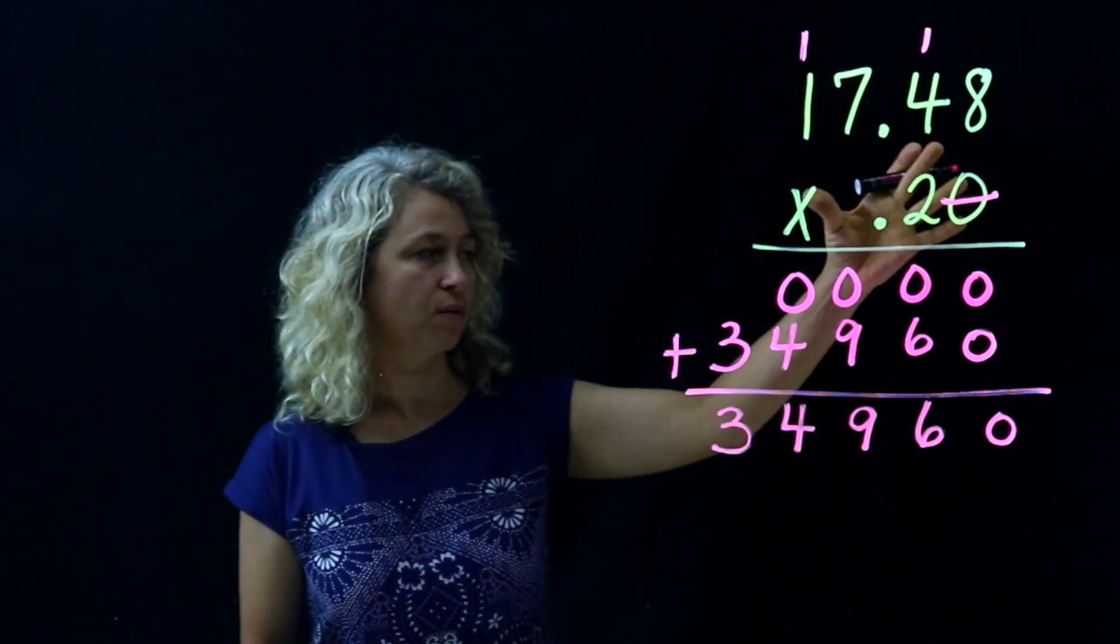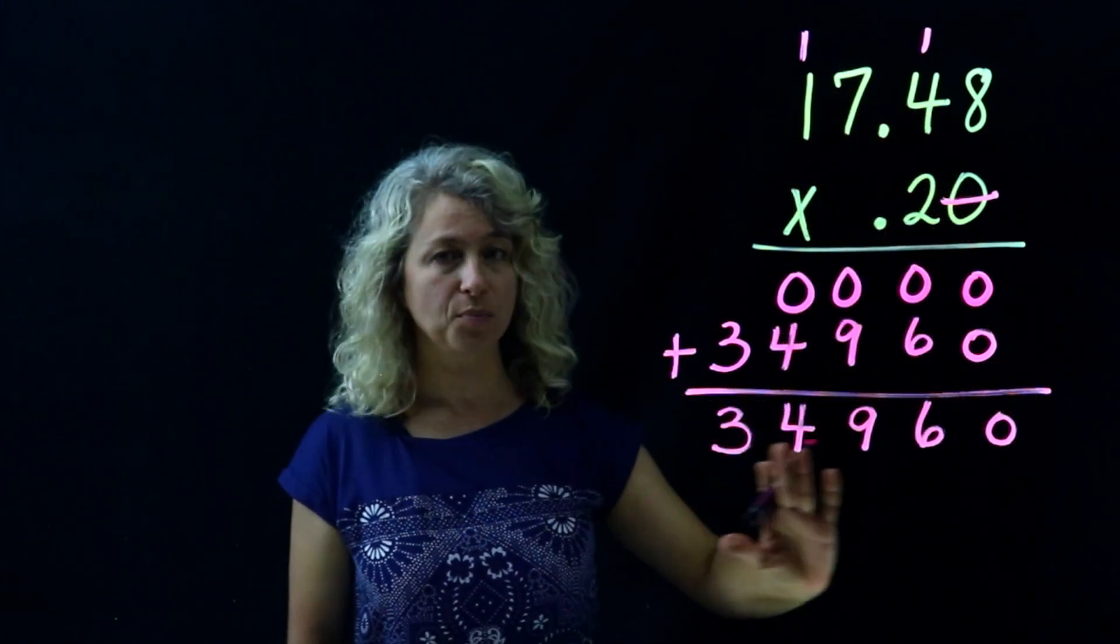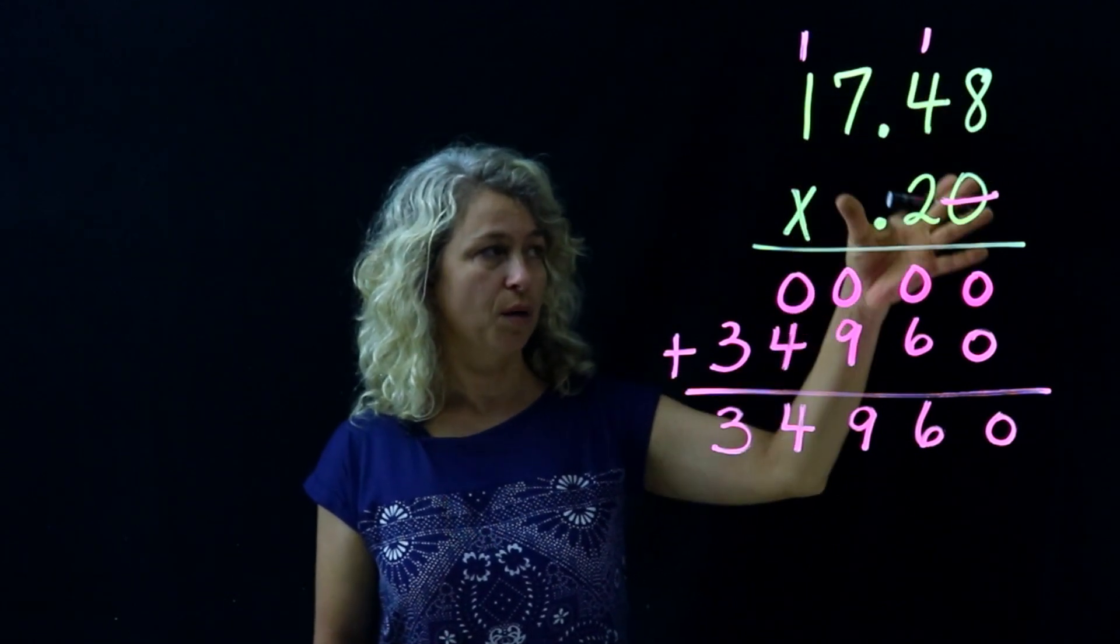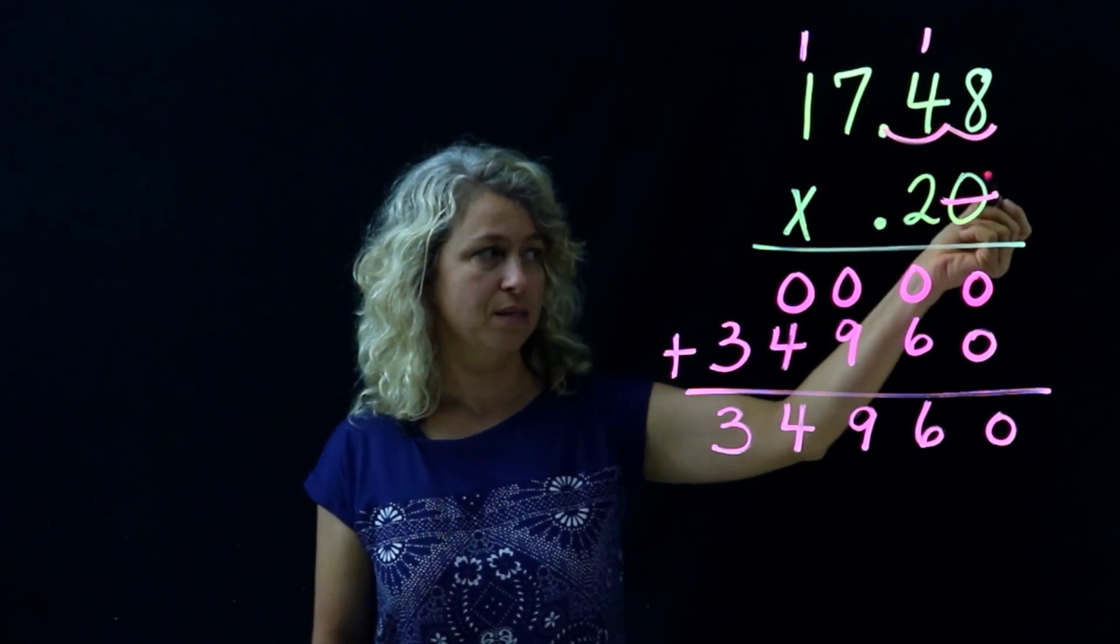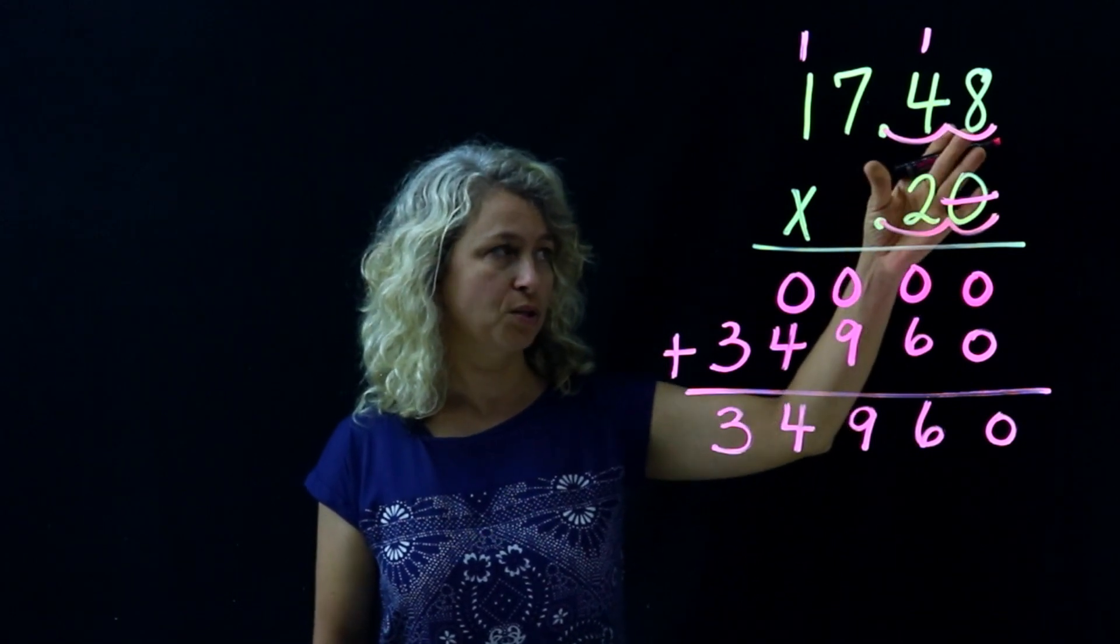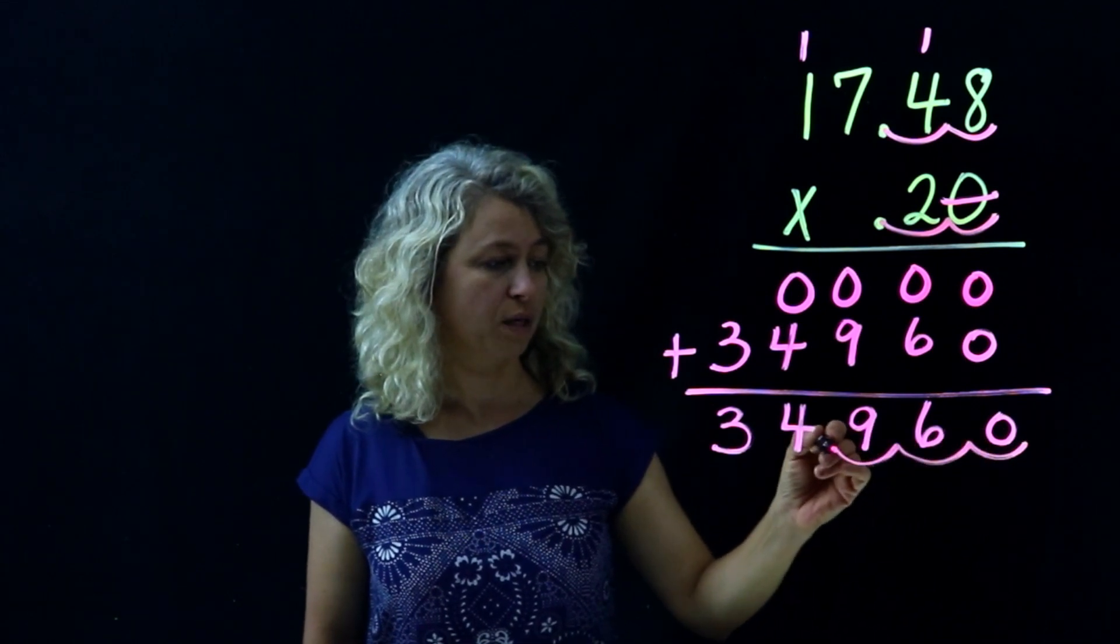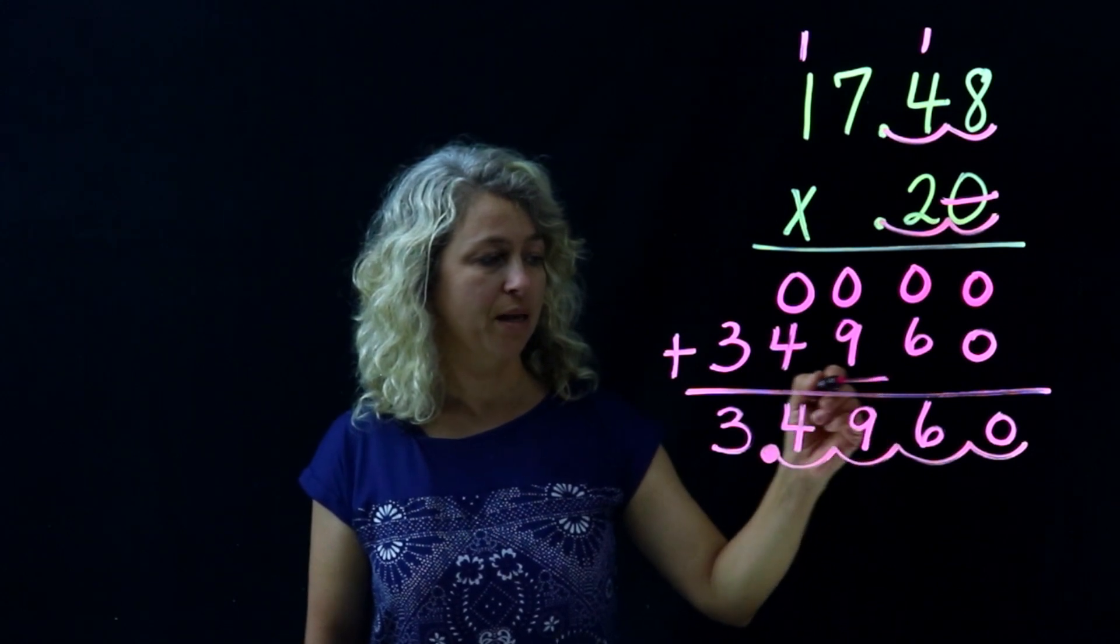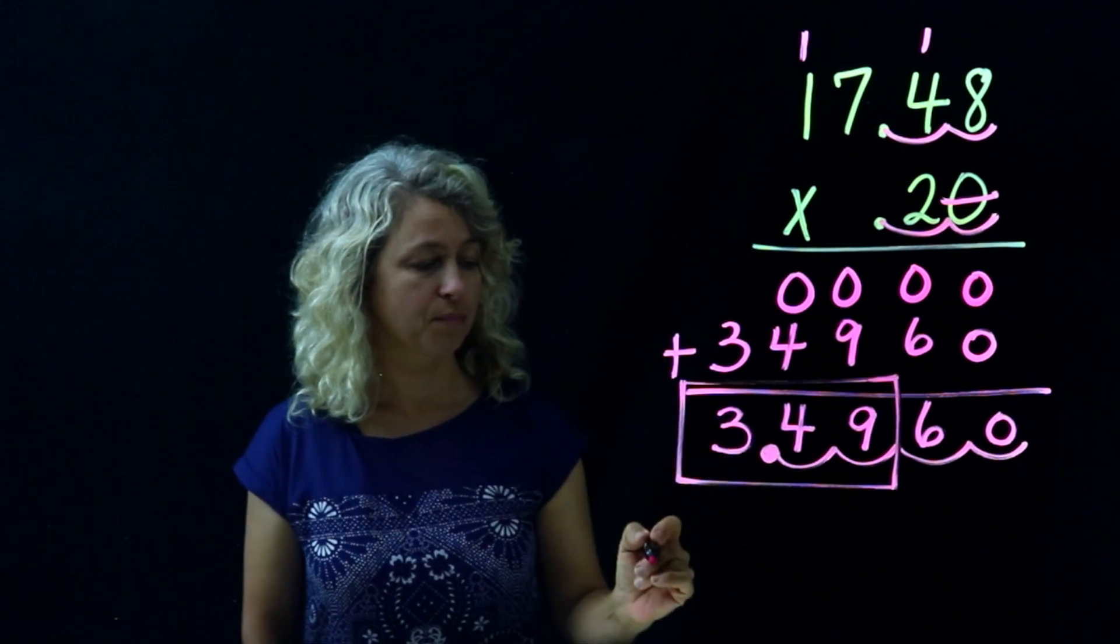Now here's where you really want to focus in. We've got to figure out where to put the decimal. You're counting the decimal places in your two numbers here, so start here and count over one, two decimal places, and this would be three, and this is a total of four. So you're going to come down here and transfer one, two, three, four - this is where your decimal will go.